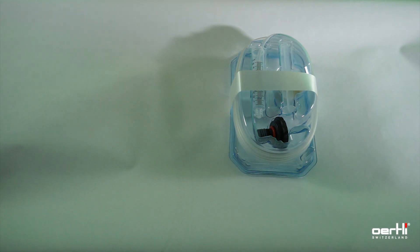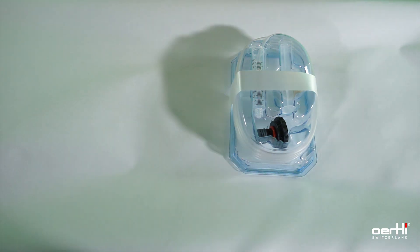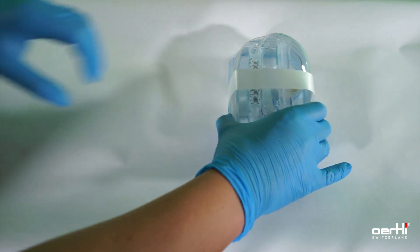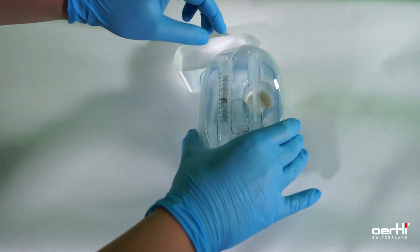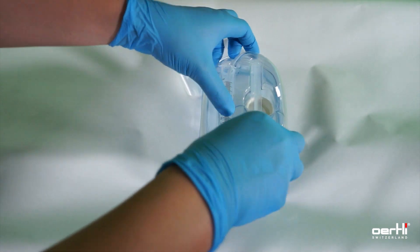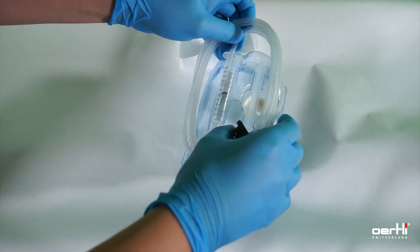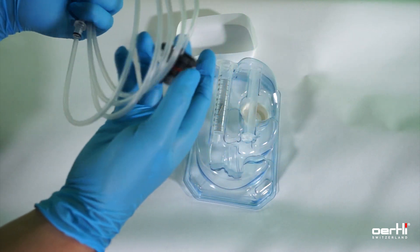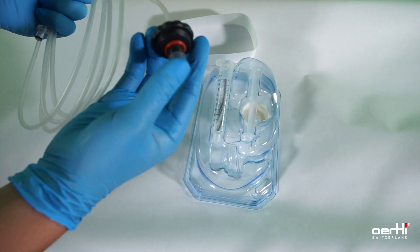For silicon oil extraction, you use the same set as for injection. It comes again here with the black syringe adapter and the tube containing the plunger stopper.